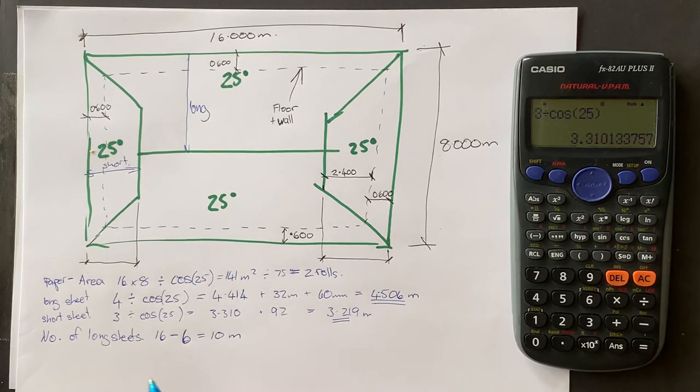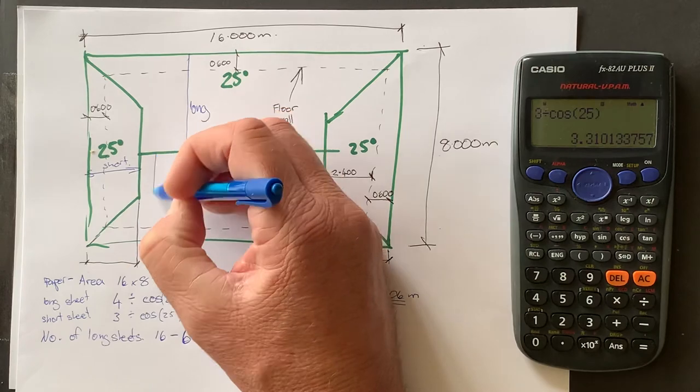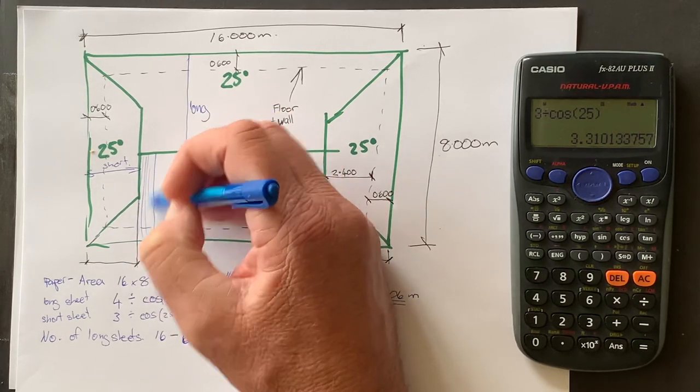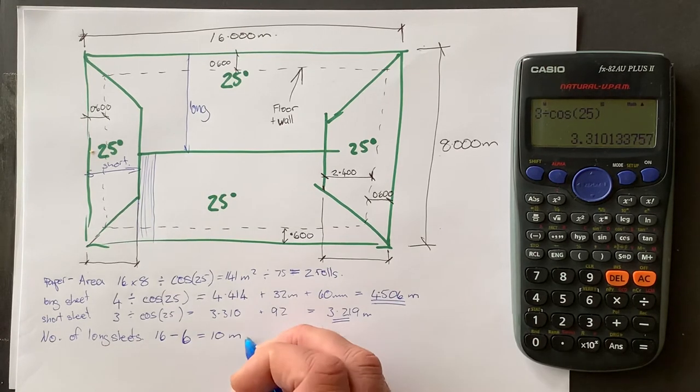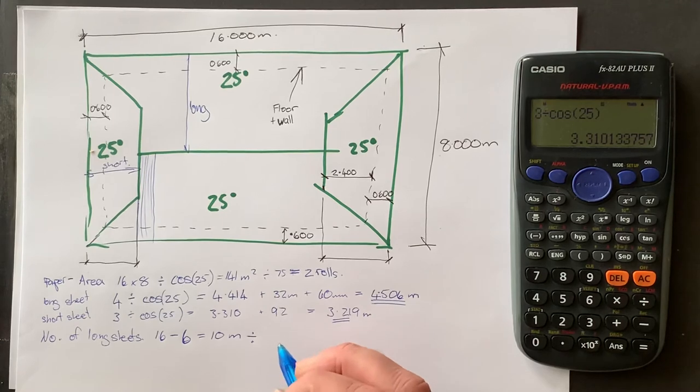Okay. Now a sheet of iron, each sheet which goes down like that, that's a sheet of roofing on like that. They have an effective cover of 760 millimeters. And that's all corrugated iron.